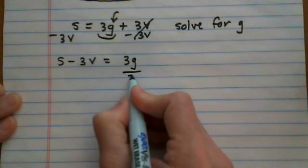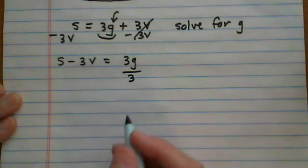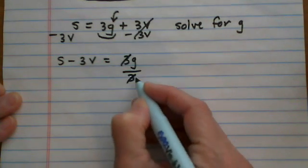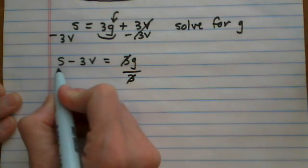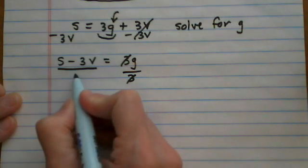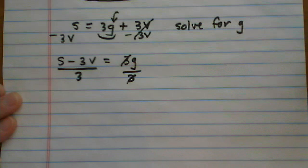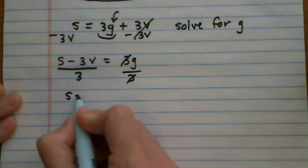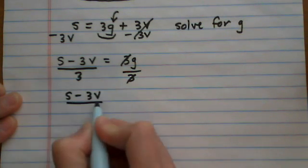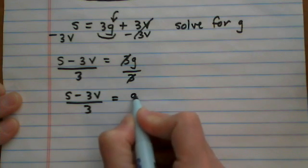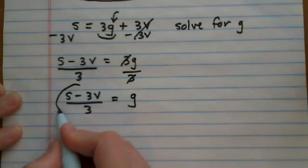Now we have a 3 being multiplied to g. I don't want the 3 there, so I divide it off so it cancels to 1. I have to divide the entire left side by 3 also. That gives me s minus 3v over 3 equals g.